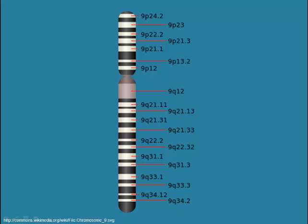DNA is made up of genes which are located on chromosomes. Each gene controls a particular characteristic or capability of an organism. Genes work by coding for all the proteins the organism will ever need to build, including transport proteins on cell membranes, some hormones, pigments, and muscle fibres.